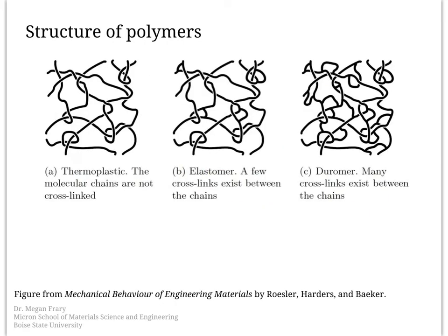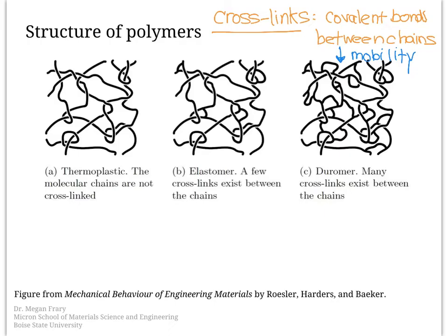Polymers are classified based on the amount of chain linking that occurs between the chains. Cross-links between chains are covalent bonds which hold the chains together and decrease their mobility. The first class of polymers are thermoplastics, which we will focus on most. In thermoplastics, the molecular chains are not cross-linked — the chains are tangled and looped around one another, but they are not connected to one another.